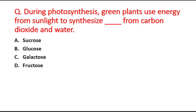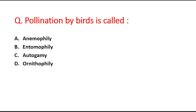Next question: during photosynthesis, green plants use energy from sunlight to synthesize blank from carbon dioxide and water. Option A is sucrose, option B is glucose, option C is lactose, and option D is fructose. The right answer is option B, glucose.